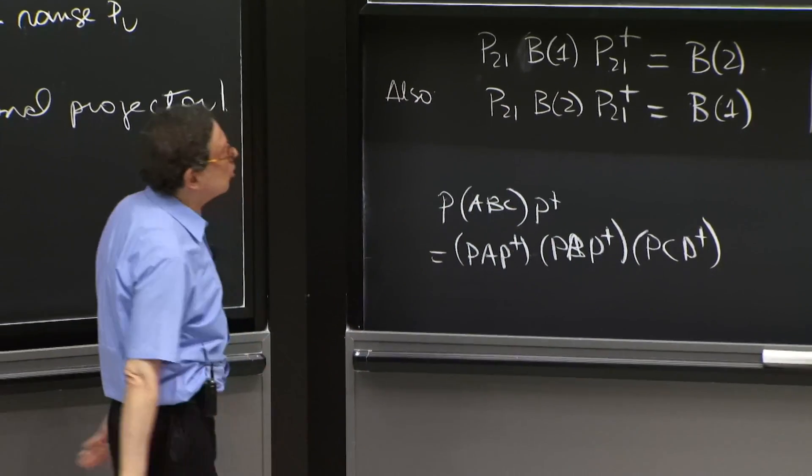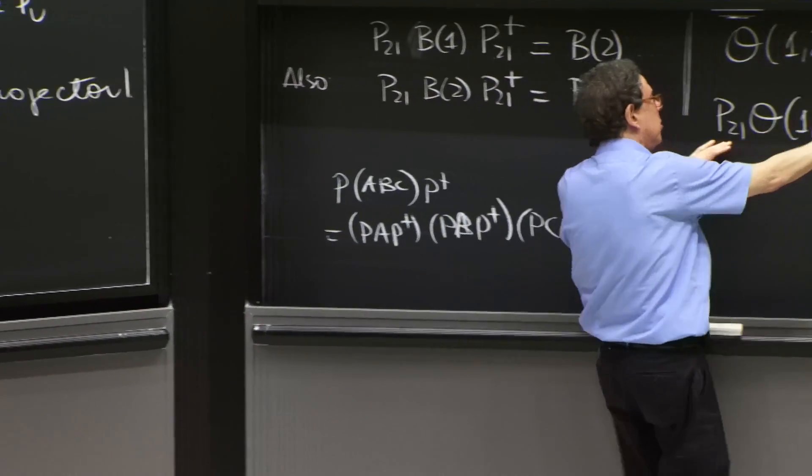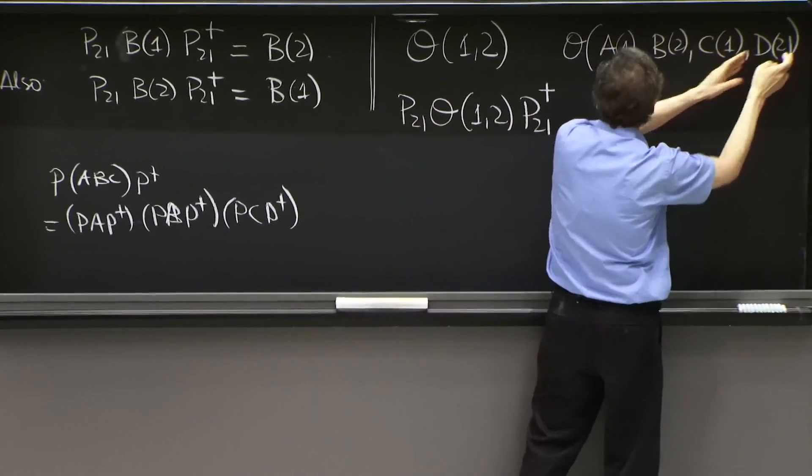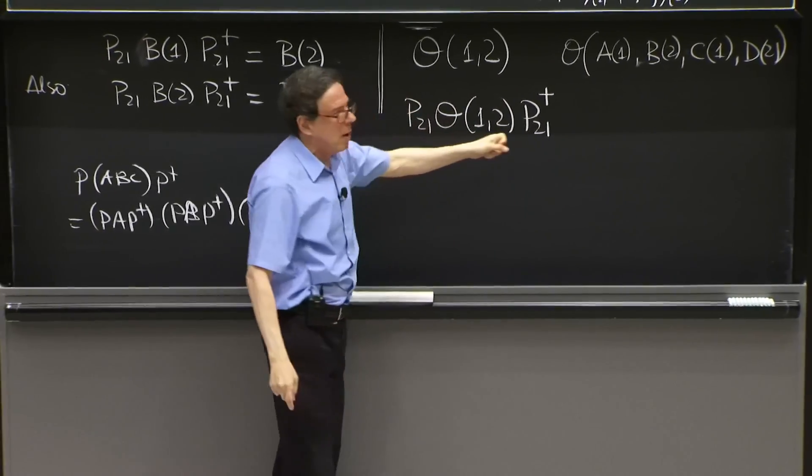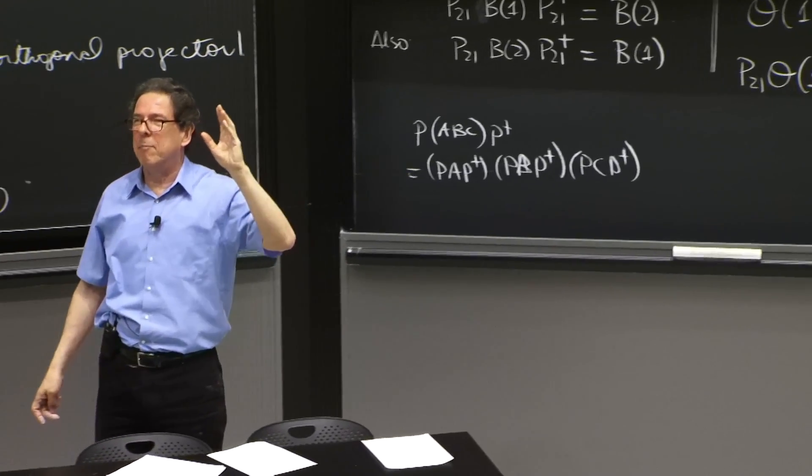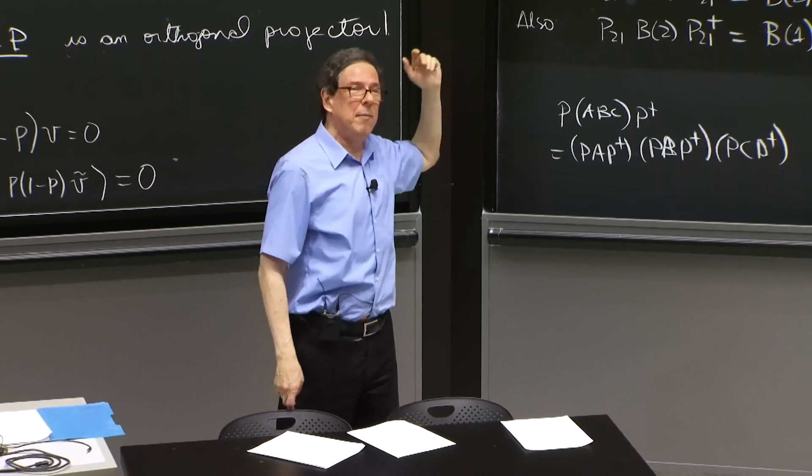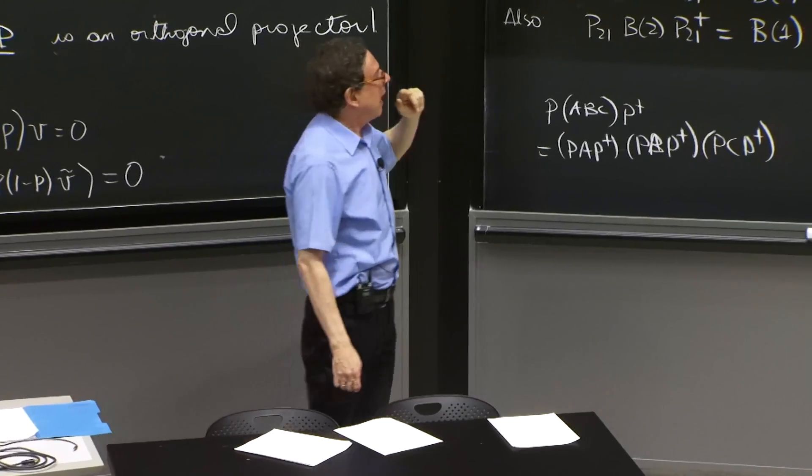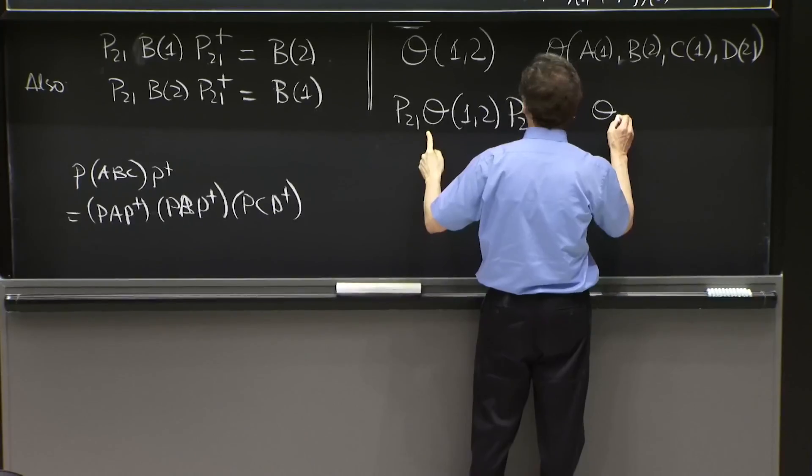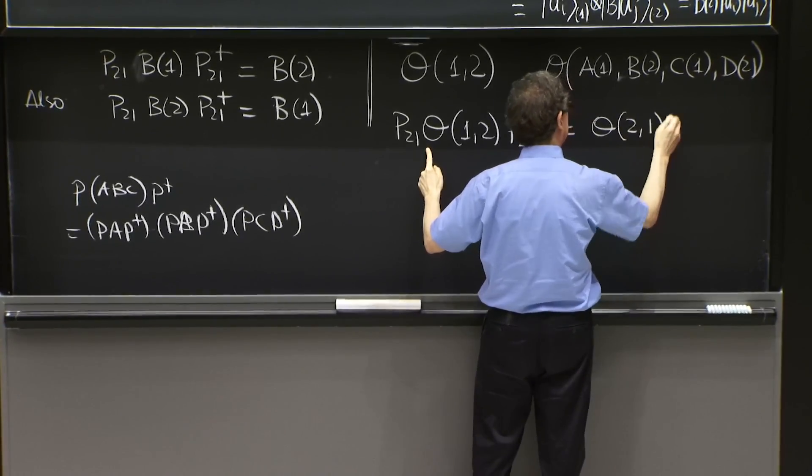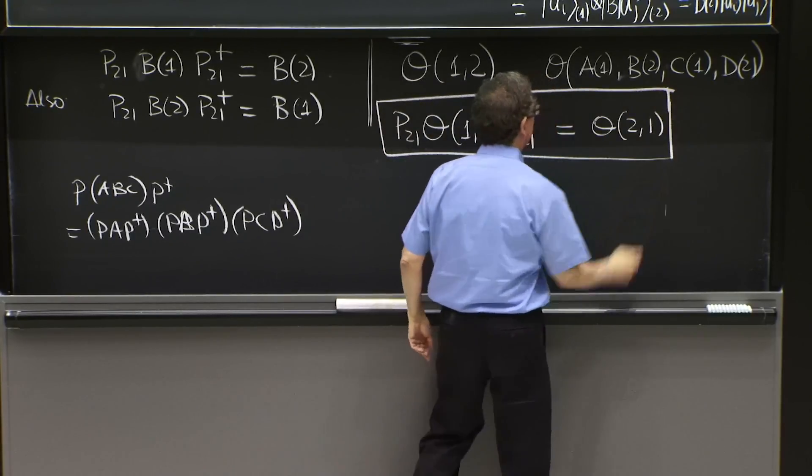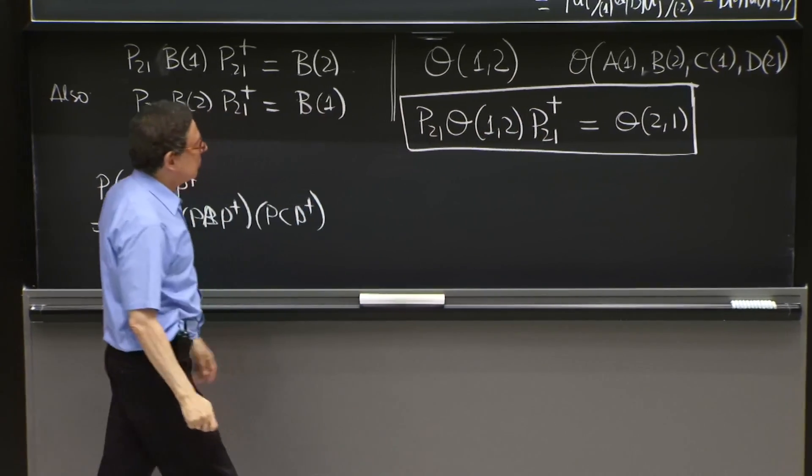It's like acting on each one. And so when you have this P21, P21 P dagger acting on this, it's as if each one of those is surrounded by a P21, P21 dagger. So each label 1 will become a label 2, and each label 2 will become a label 1. And therefore, this operation is going to give you O21, for an arbitrary operator acting on these two labels.